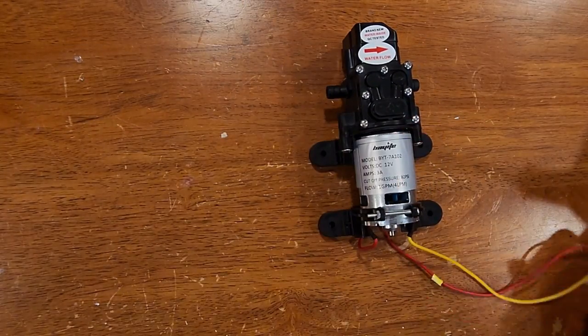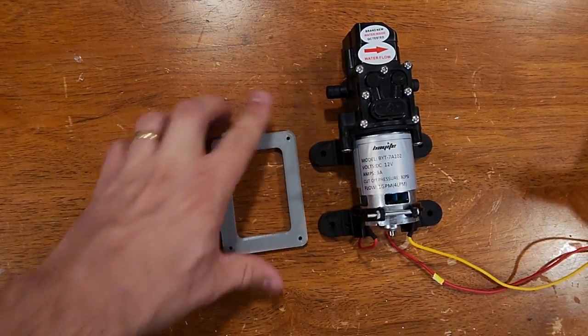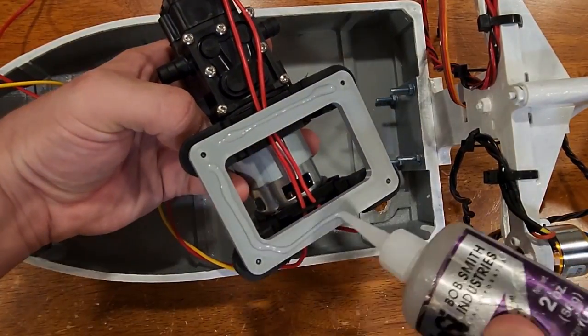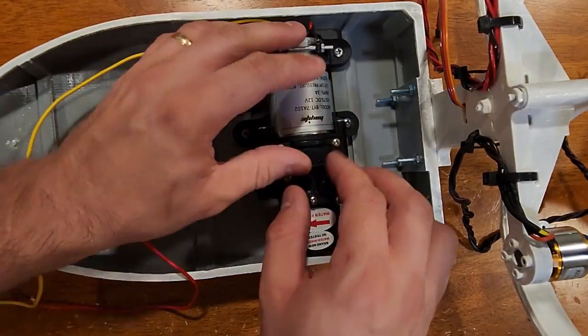Here's the pump itself. It runs off 12 volts and pumps up to 80 psi at 4 liters or about 1 gallon per minute. My plan is to use it when I'm racing against other boats, either to knock them over or flood them with water.